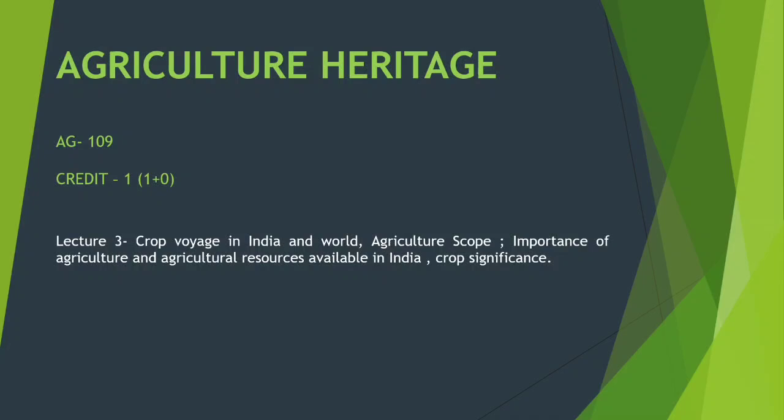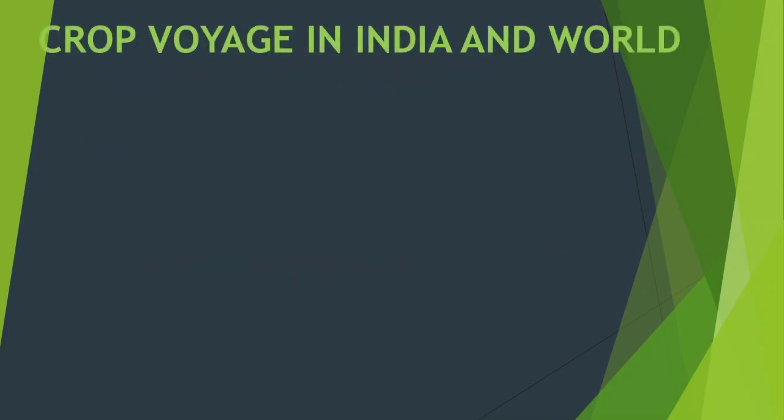How does the crop change and travel in India and the world? Crop voyage's meaning is that the crop is traveling — the introduction of different crops from outside and the movement of crops originated in India to abroad, and how crops traveled within India.